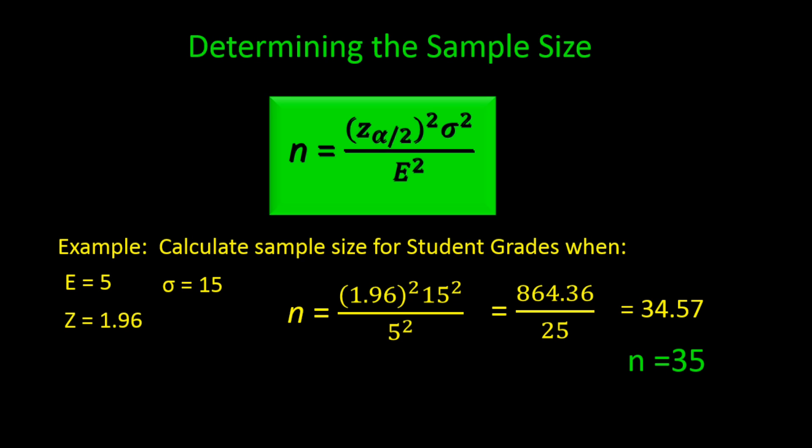Whenever we calculate the sample size we always round up to over satisfy the criterion. So the next integer value would be a sample size of 35.